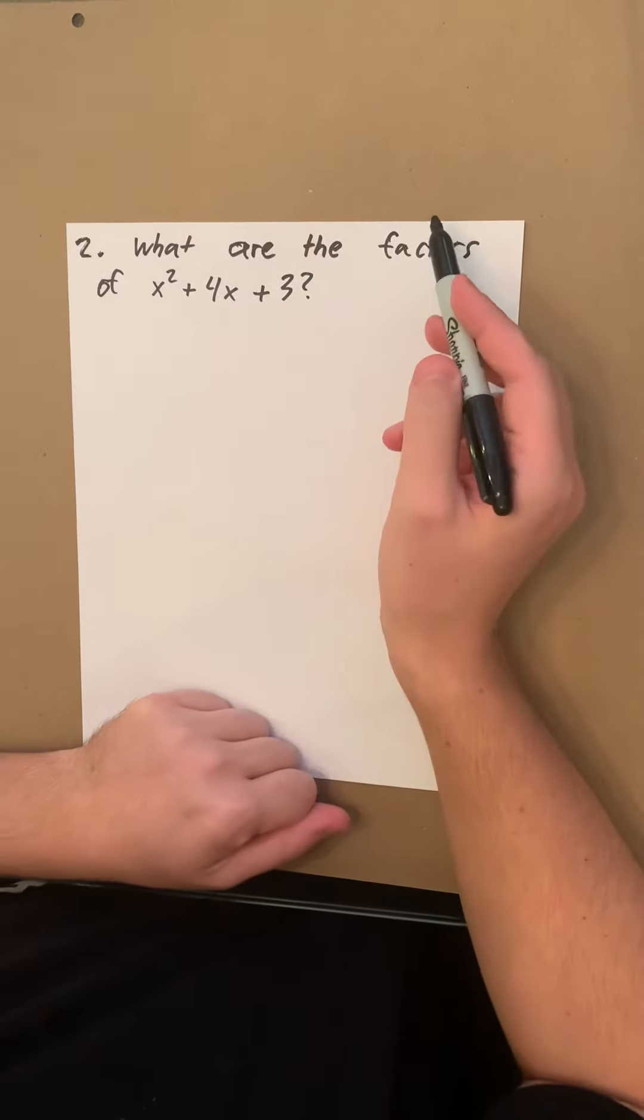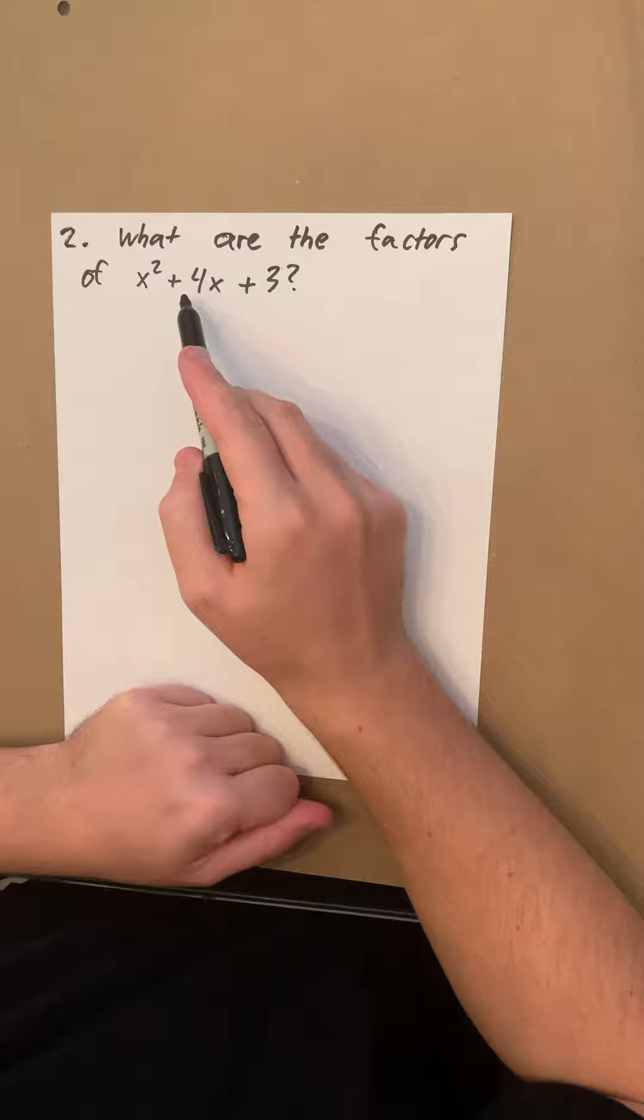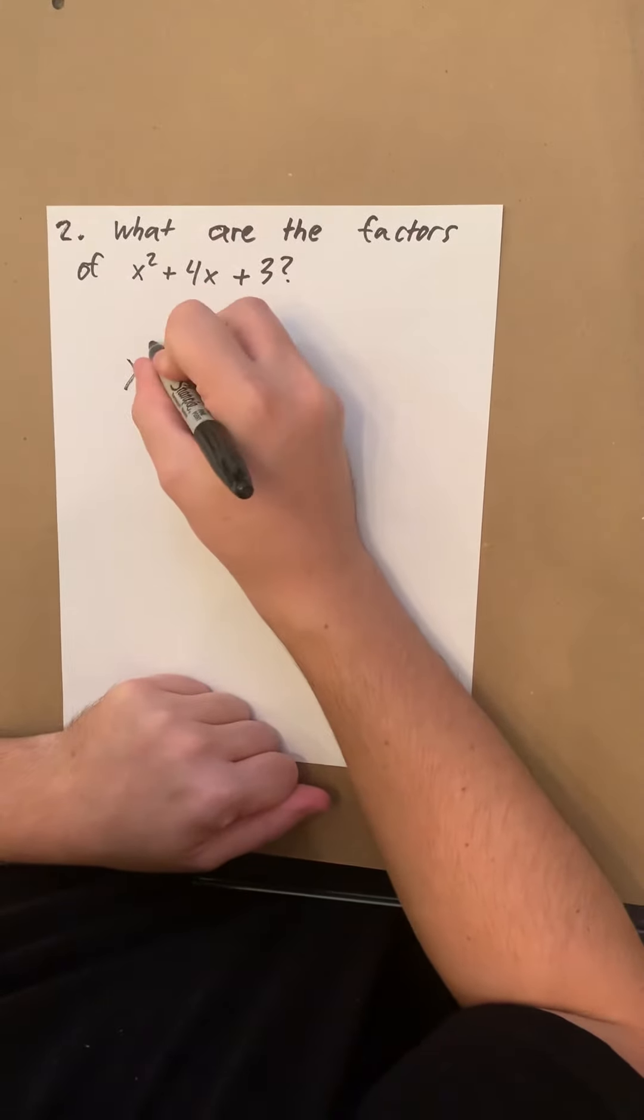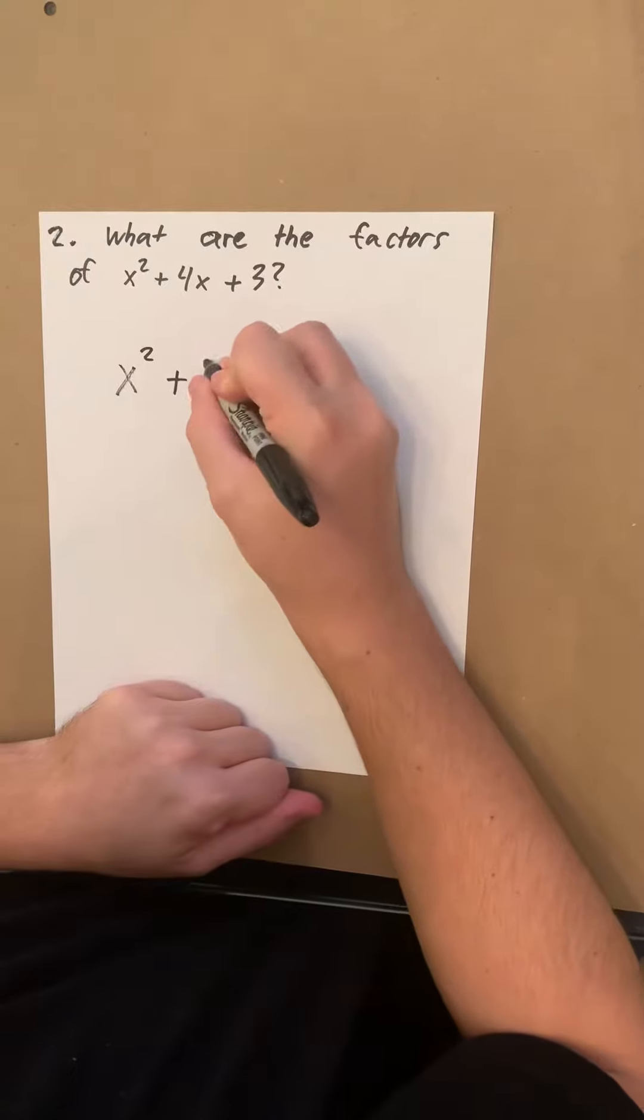For number two it's asking what are the factors of x squared plus 4x plus 3. First we're gonna rewrite it over here so it's easier to see.